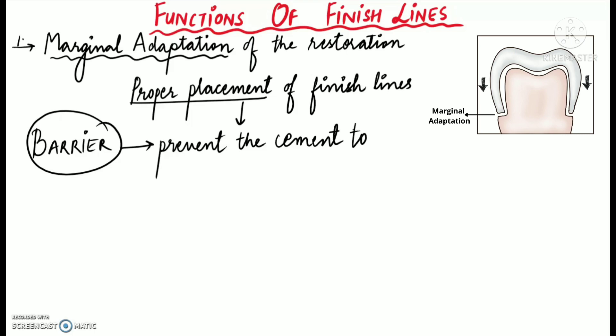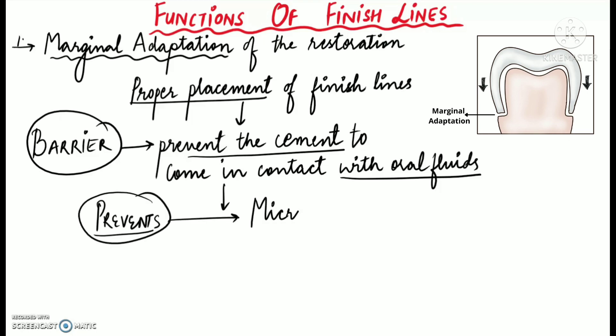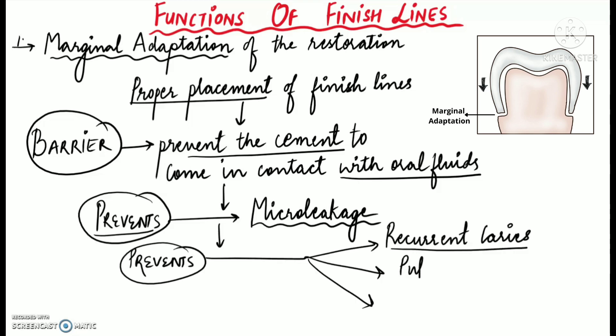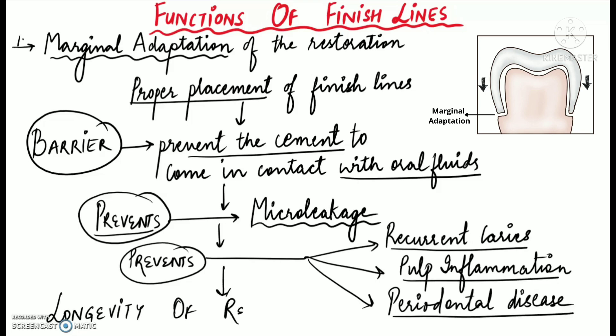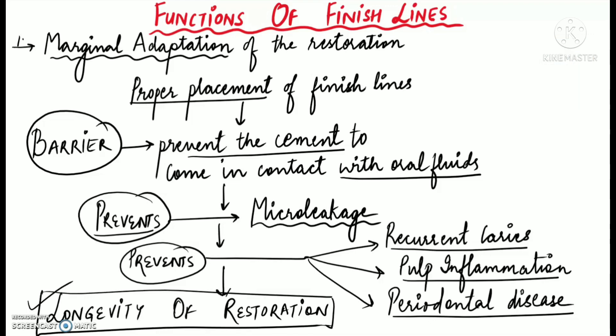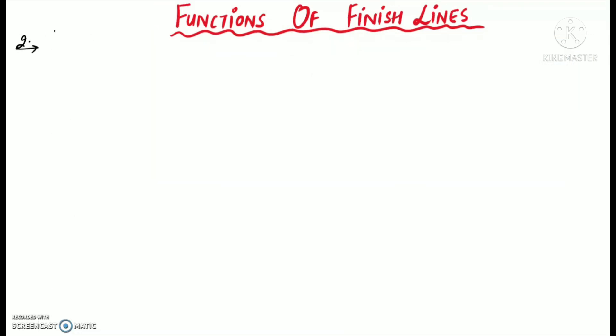That means if we place the finish line properly, it will create a barrier which further prevents the cement from coming in contact with the oral fluids. And therefore, these finish lines help in preventing micro leakage, and this further prevents recurrent caries, pulp inflammation, or even periodontal diseases, and this further ensures the longevity of the dental restoration.